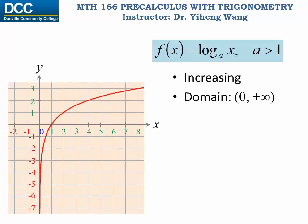The domain is x must be bigger than zero. Remember, this used to be the range for the exponential function. Also, the range for this function is the function value can be any real number. Again, this used to be the domain for the exponential function.